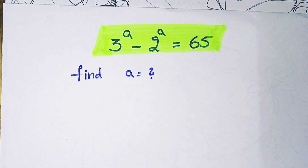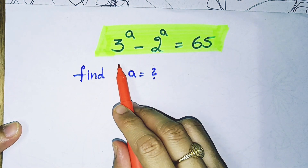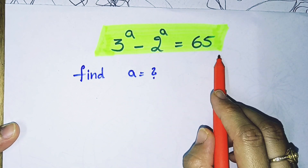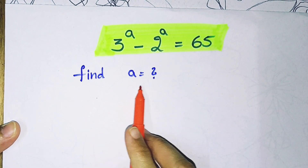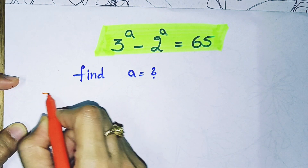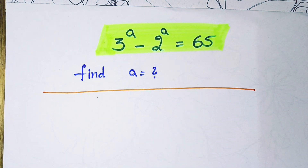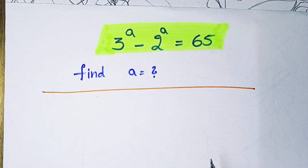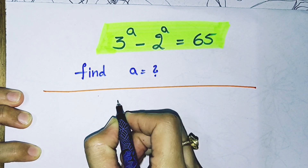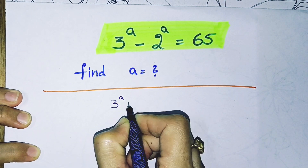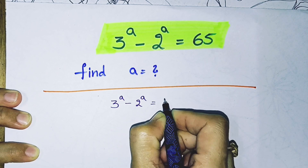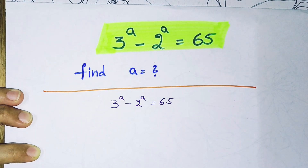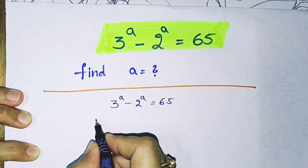Hello viewers, welcome back to my channel. In this class we are going to discuss a Math Olympiad question which is going very viral on the internet. Our question is: 3 to the power a minus 2 to the power a equals 65, and we have to find out the value of a.